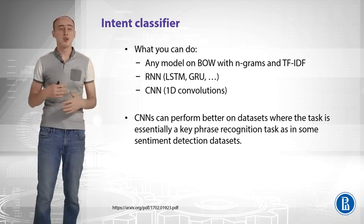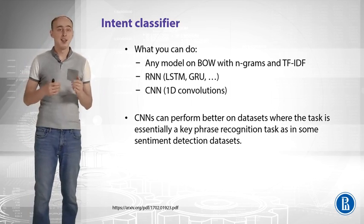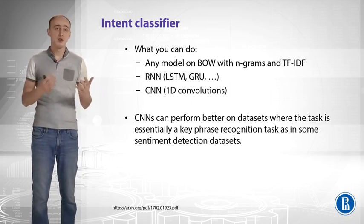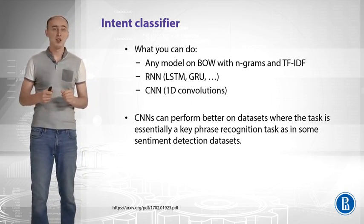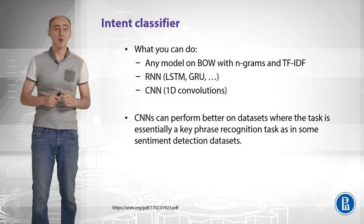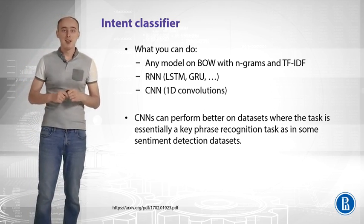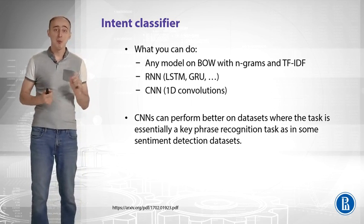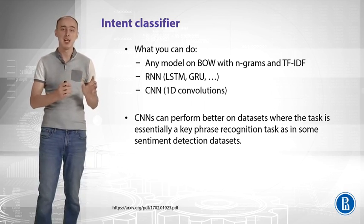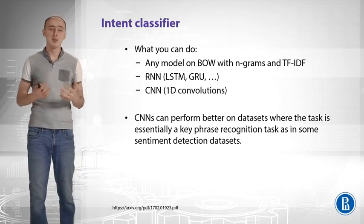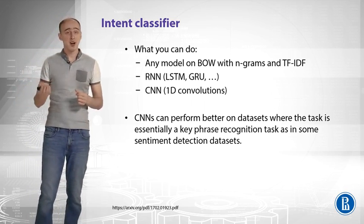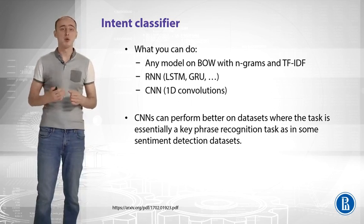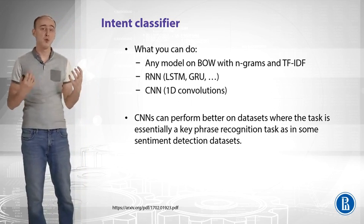Or you can use some recurrent architecture with LSTM cells, GRU cells, or any other. You can also use convolutional networks and 1D convolutions that we overviewed in week 1. Studies show that CNNs can perform better on datasets where the task is essentially a key phrase recognition task, such as some sentiment detection datasets. So it makes sense to try RNN, CNN, or any classical approach as a baseline and choose what works best.